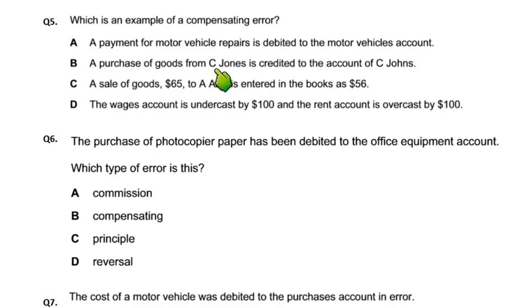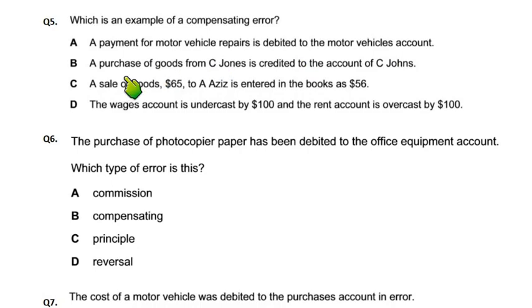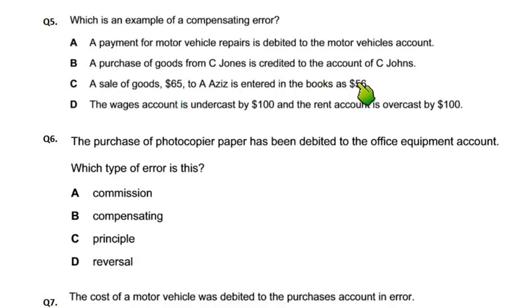Option B: purchase of goods from C Jones entered to the account of C John — this is an error of commission. Option C: sale of goods 65 to Abdul Aziz is entered in the books as 56 — 65 ki jagah 56 likh diya — this is an error of original entry.